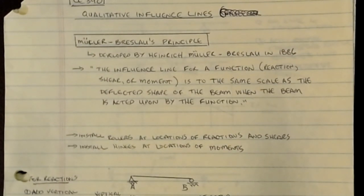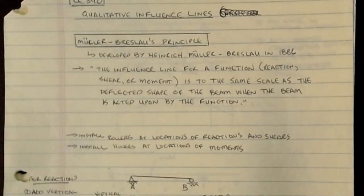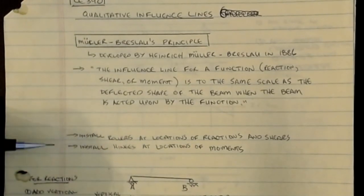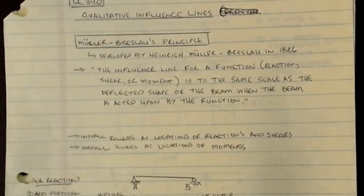The method I'm going to show you is fairly dated — it goes all the way back to 1886 by Heinrich Mueller-Breslau, and it's known as the Mueller-Breslau principle. He stated that the influence line for a function such as a reaction, a shear, or a moment is to the same scale and shape as the deflected shape of the beam when the beam is acted upon by that function. The basic premise boils down to two points: for reactions or shear, you install rollers; for moments, you install hinges — because shear is related to displacement and moments are related to rotation.